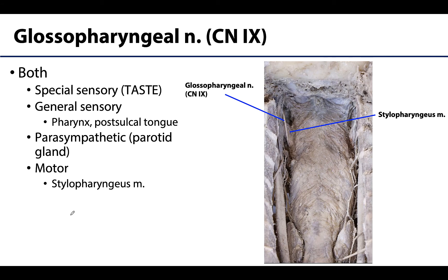The glossopharyngeal nerve, cranial nerve IX, has both afferent and efferent fibers. It carries special sensory fibers for taste to the post-sulcal tongue, general sensory fibers for the same area, and sensory innervation for most of the pharynx. Preganglionic parasympathetic fibers originate from this nerve, synapse in the otic ganglion, and are destined for the parotid gland — the largest salivary gland. It also provides somatic motor innervation to the stylopharyngeus muscle.